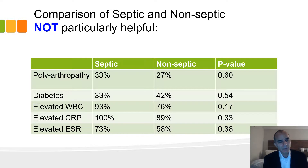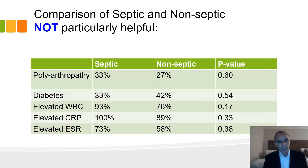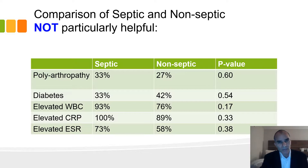These are factors that were NOT helpful: polyarthropathy — someone coming in with multiple inflamed joints — doesn't guide you because both septic and non-septic had similar incidence. Diabetes was not helpful. Elevated white count, elevated sed rate, or elevated CRP were not specific because even though they might seem to be markers of a septic wrist, the majority of patients with non-septic wrists also had elevated markers.